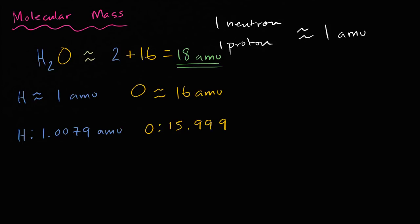So 18.015 atomic mass units, and you could actually consider this the molecular weight, because once again we're using atomic weights, we're using weighted average, and you could think of the weighted average of water molecules would be a little bit closer to this, but these two numbers are very close.